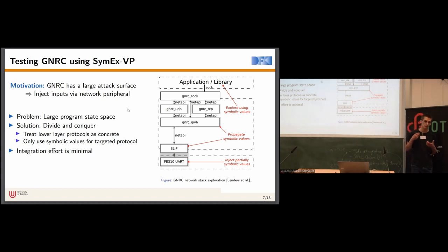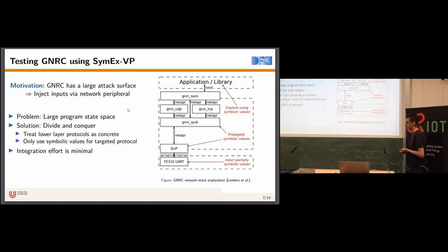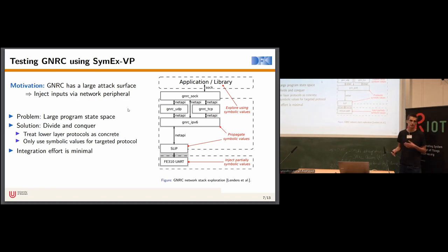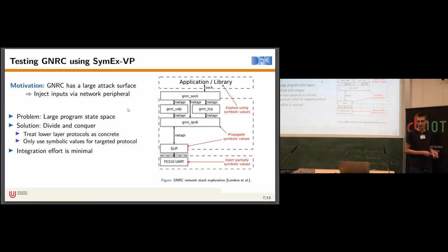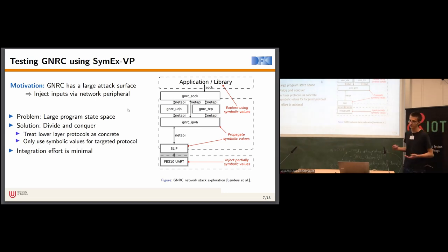The advantage of injecting test inputs at the peripheral level is that the integration effort is minimal — we don't have to write any kind of test harness. We can just take an existing application, inject our inputs through the peripheral, and test it. The only change required is configuring your GNRC application to use a SLIP network peripheral.